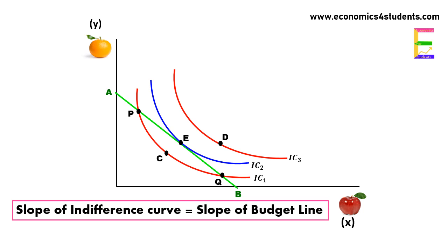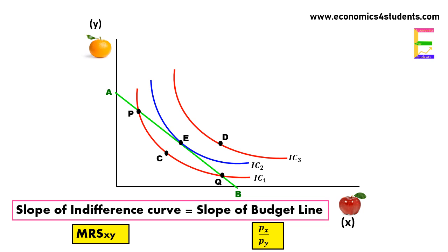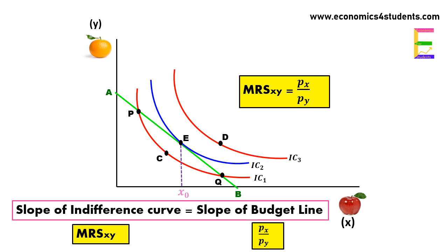That means at the optimal point, the slope of the indifference curve is equal to the slope of the budget line. The slope of the indifference curve is MRS_XY, and the slope of the budget line is Px/Py. Therefore, at the optimal point, MRS_XY is equal to Px/Py. At this point, the consumer purchases X0 units of good X and Y0 units of good Y to derive maximum satisfaction.